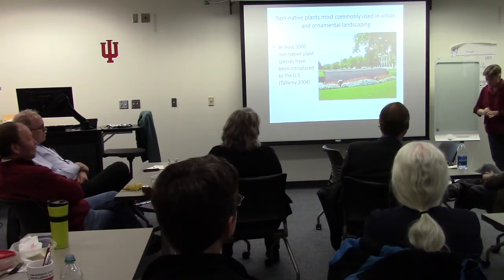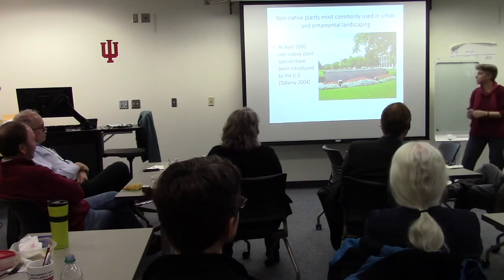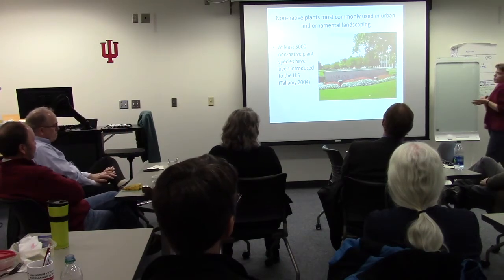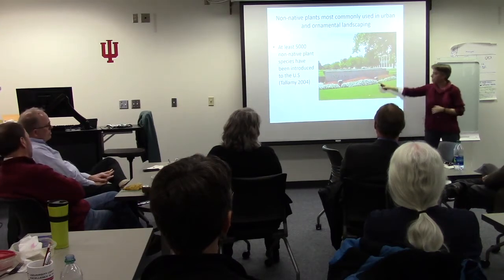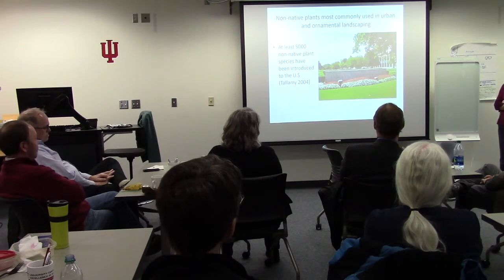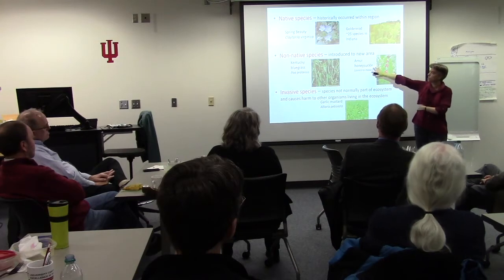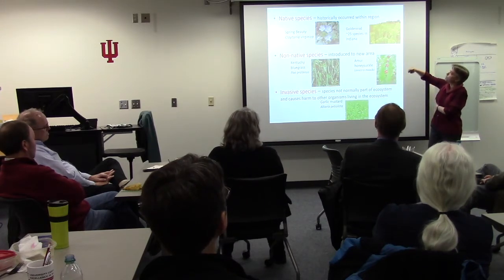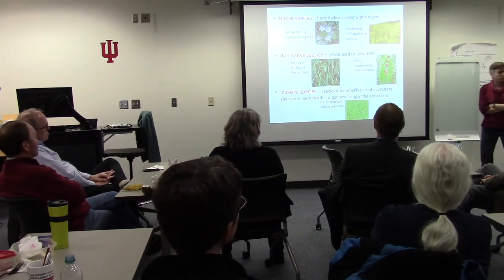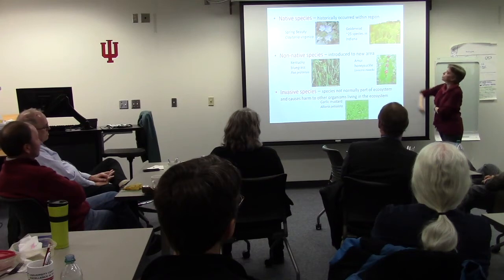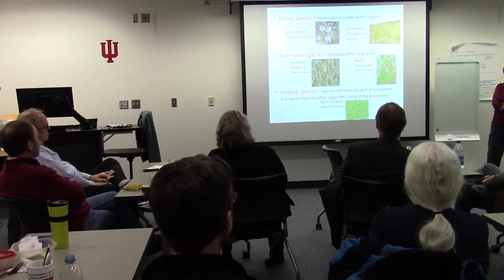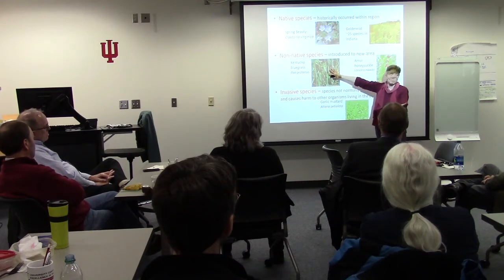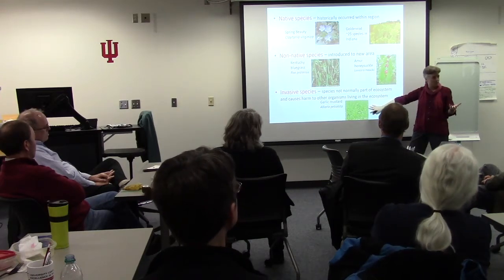The last part of the talk: we're coming back to campus. In general, non-native plants are used in landscaping, and at least 5,000 non-native plant species have been introduced to the U.S. largely for landscaping purposes. We define non-native as plants introduced from elsewhere — Kentucky bluegrass is from Europe, dandelion is from Europe. Native species are those that historically occurred within this region pre-settlement, like spring beauty and goldenrod. Invasive species are those not normally part of the ecosystem that are actually causing harm — like amur honeysuckle.